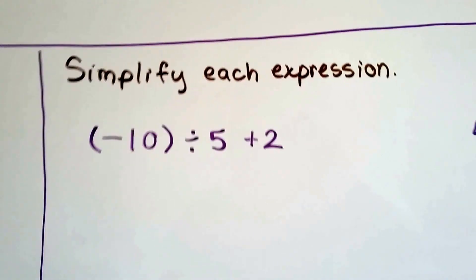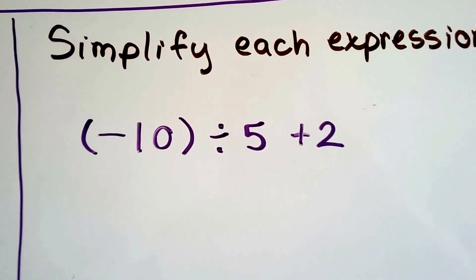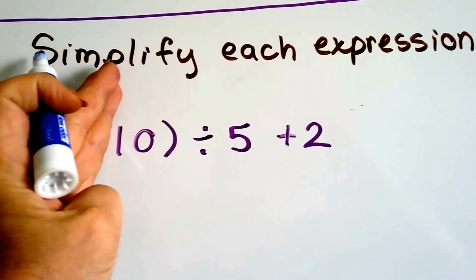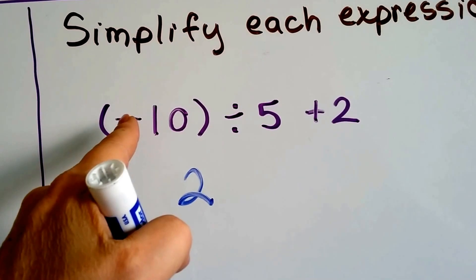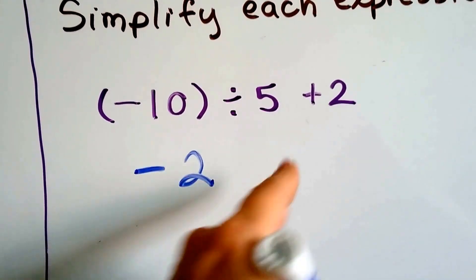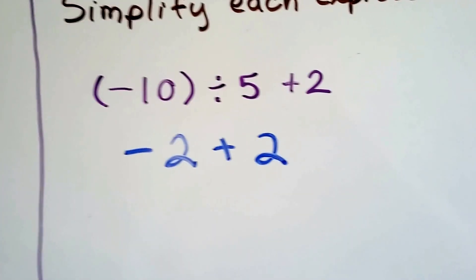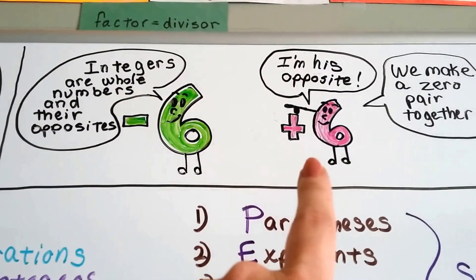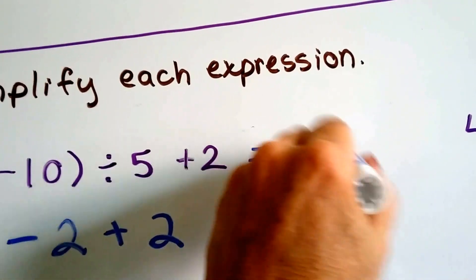Simplify each expression. We've got negative 10 divided by 5 plus 2. Order of operations says to do the division first. We do their absolute values: 10 divided by 5 is 2. Their signs are unlike — negative and positive — so it's going to make a negative 2. Now it says to add 2. Negative 2 plus 2 — when we have a negative 6 and a positive 6, they're opposites and they make a zero pair. So negative 2 plus 2 makes a zero pair — this equals zero.